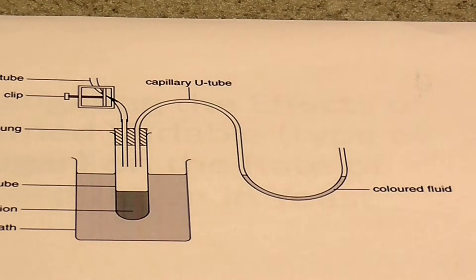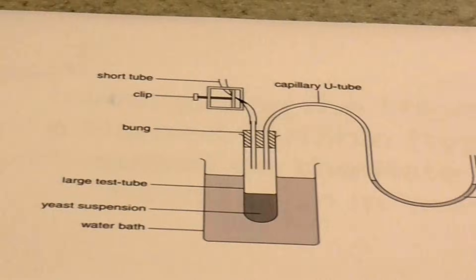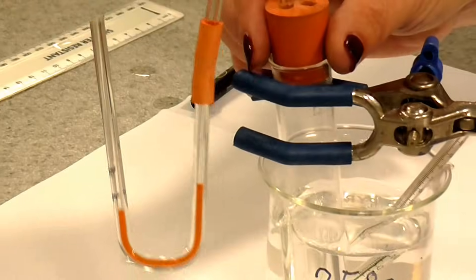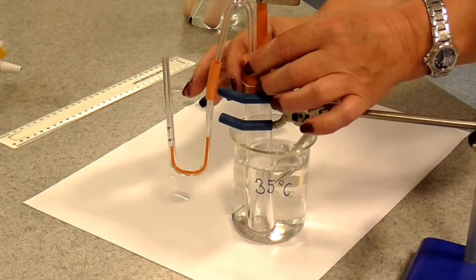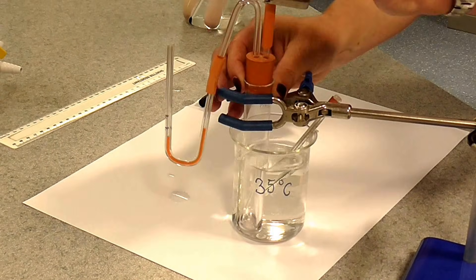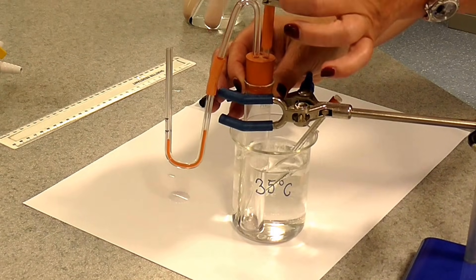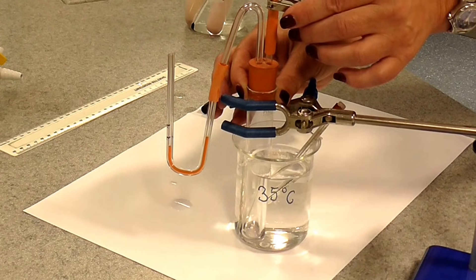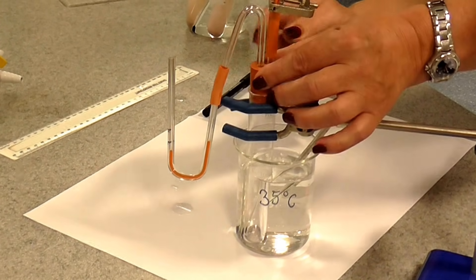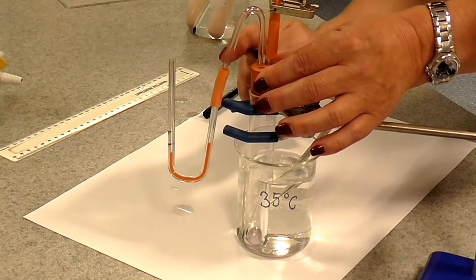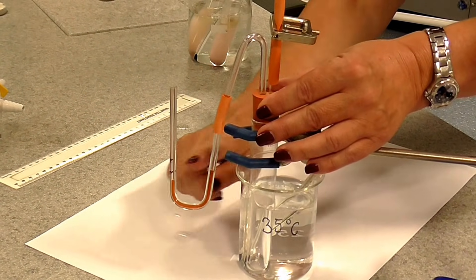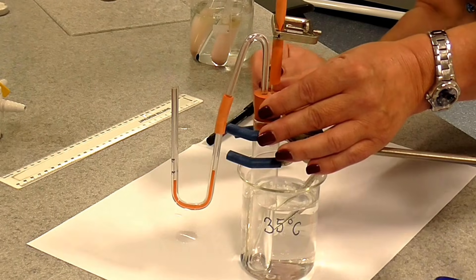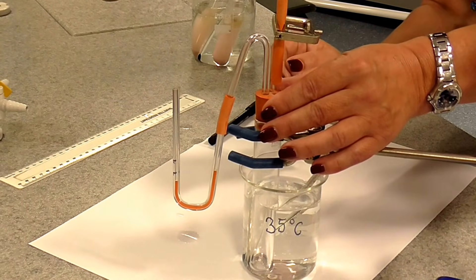I have this apparatus here to show you, and we will use it in a minute. So we've got our boiling tube, we've got our bung with a flexible tube with a clip so that can be opened and closed. And here we have our capillary U-tube — you can see I've introduced a red fluid into that.